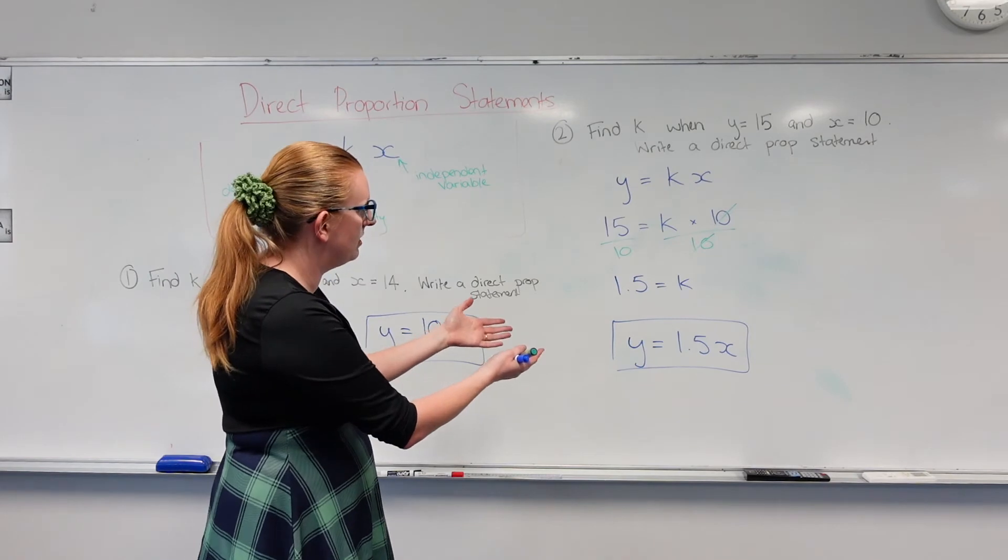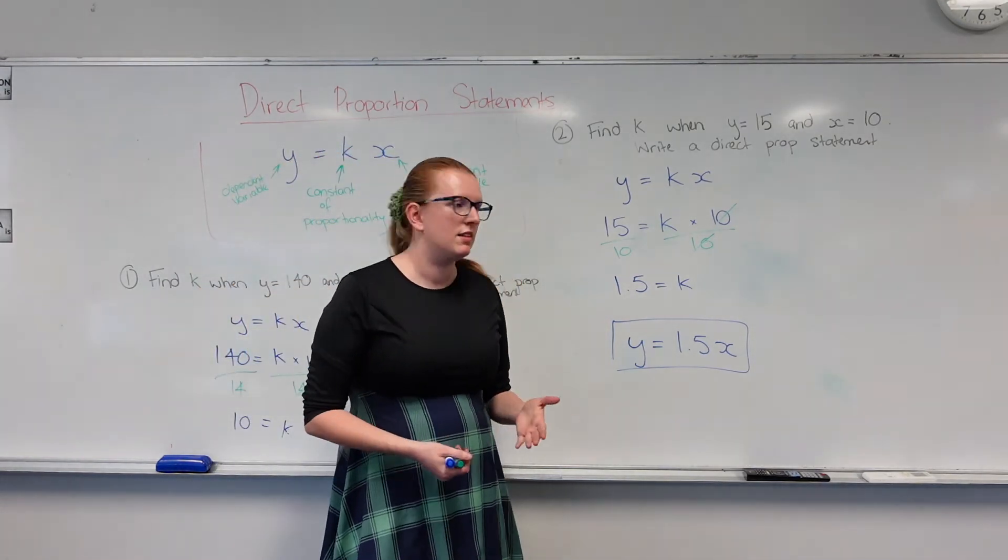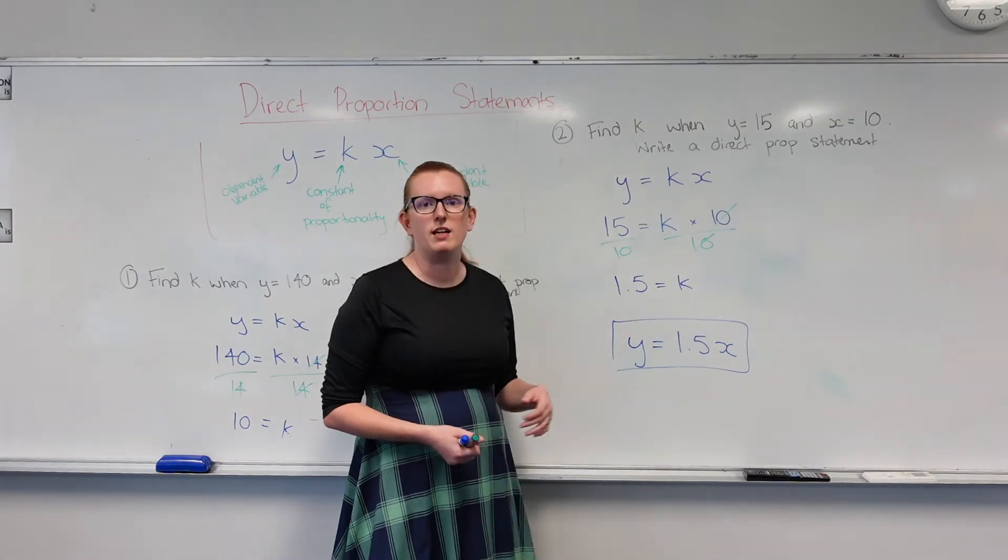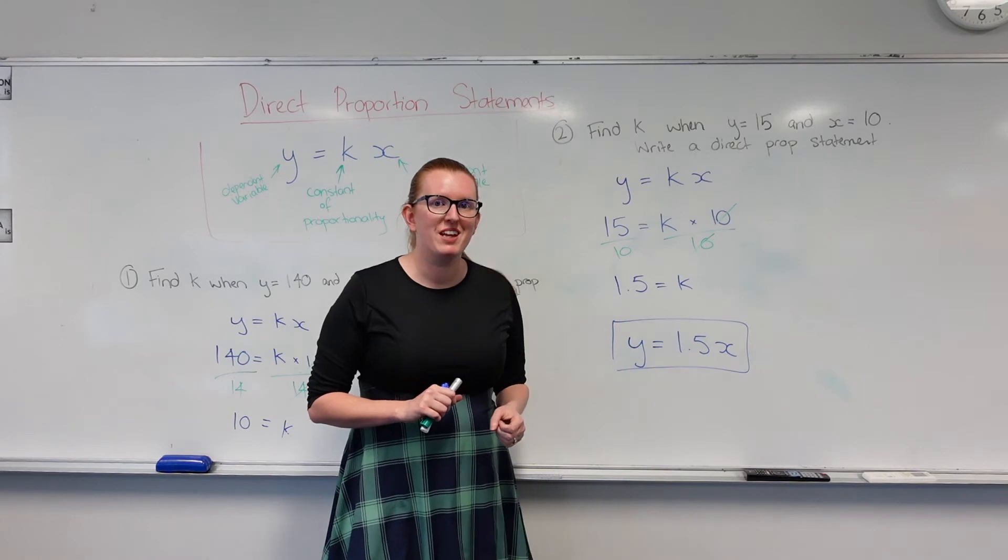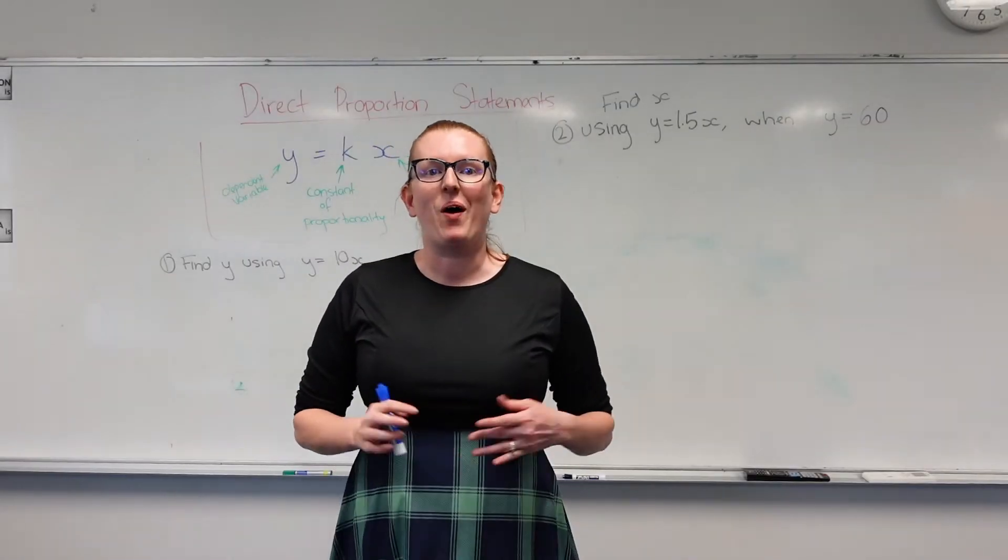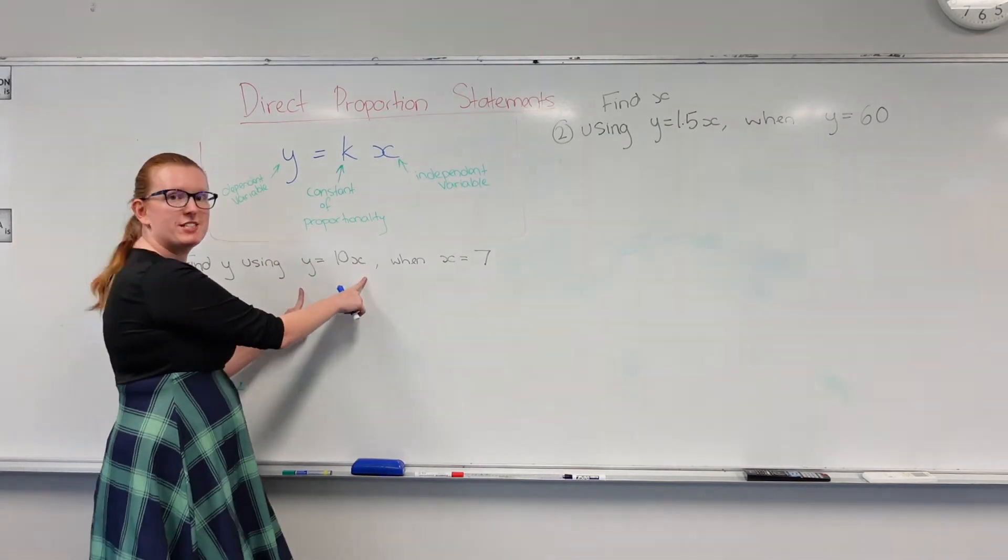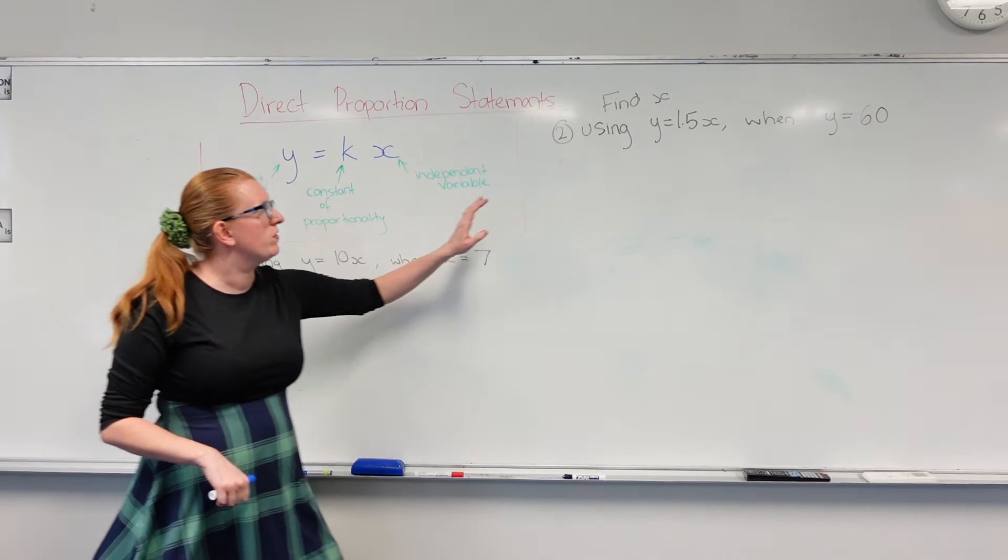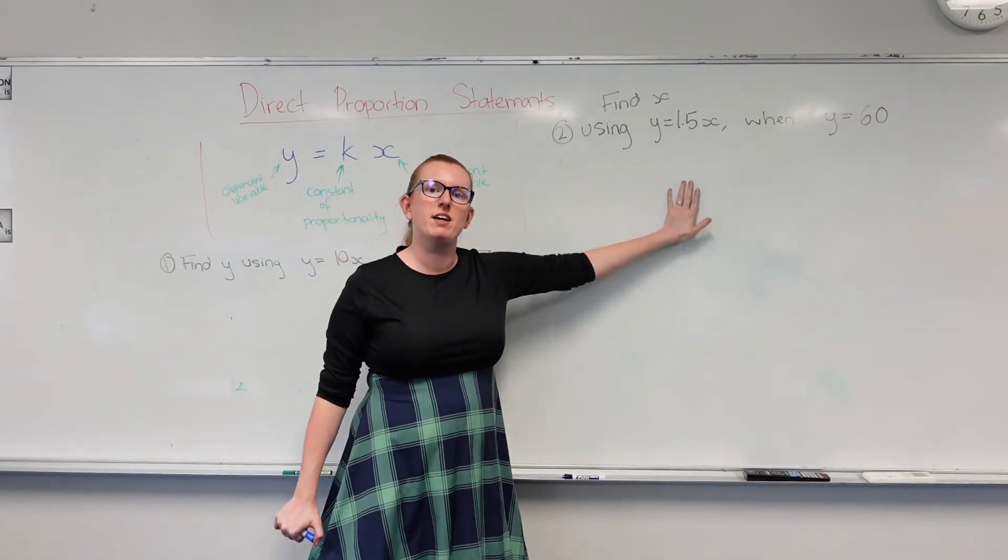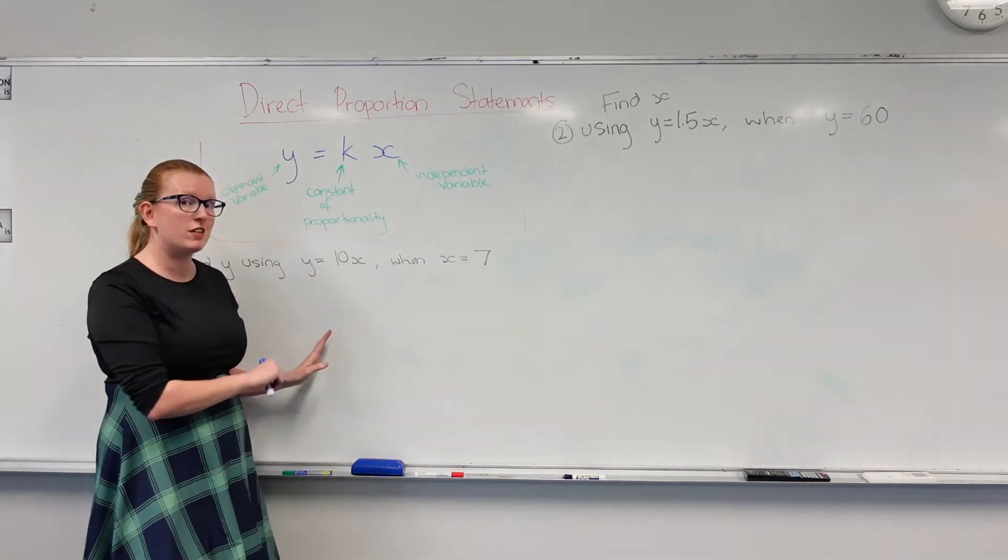And that's pretty much it for direct proportion statements. Now using something like this, we could then go further and calculate, say, the value of y if x was something different. Actually, you know what, let's do one of those now. So now I've taken our direct proportion statements from the previous questions. So y equals 10x, and over here we've got y equals 1.5x. And now we're going to use those direct proportion statements to solve another question.